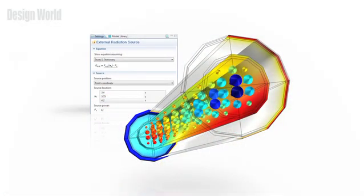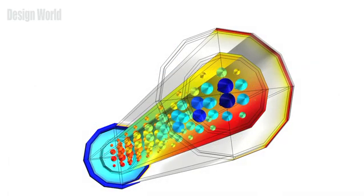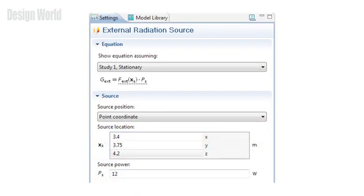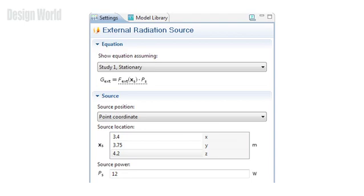External radiation sources can now be defined in the heat transfer module as sources of infinite or point sources at a finite distance. This option is available in the heat transfer physics interface and any physics interface that supports surface-to-surface radiation.